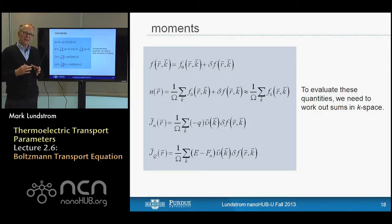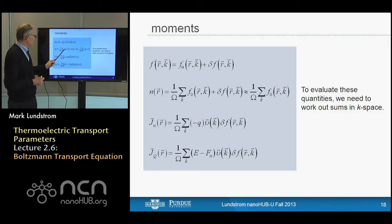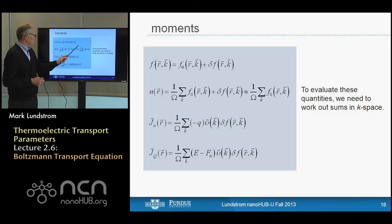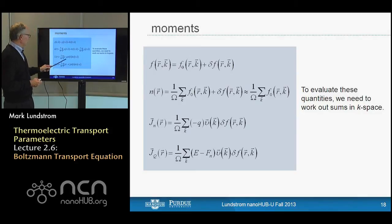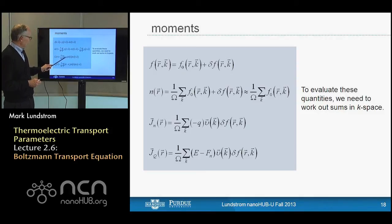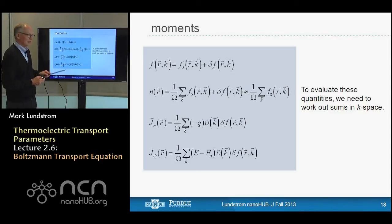There are two independent quantities that can drive us away from equilibrium: gradients in the quasi-Fermi level (the bias applied across the device), and gradients in temperature. We find the same two driving forces because we're looking at the same problem from two different perspectives. Now that we've solved the Boltzmann equation, we'd like to calculate something with this solution — quantities like electron density, current density, and heat current density.